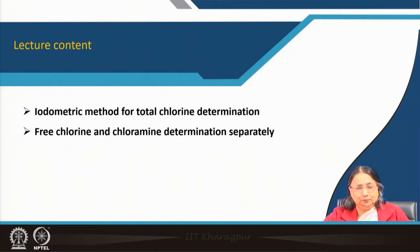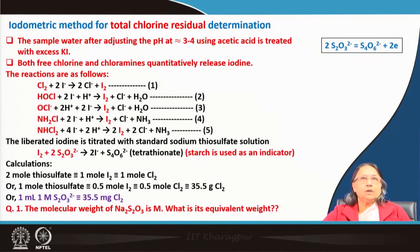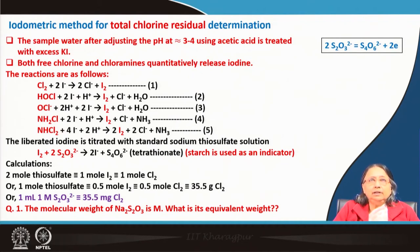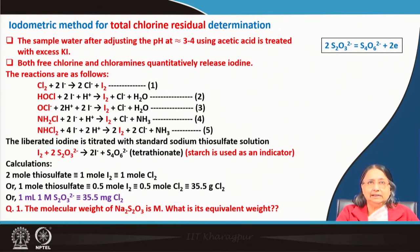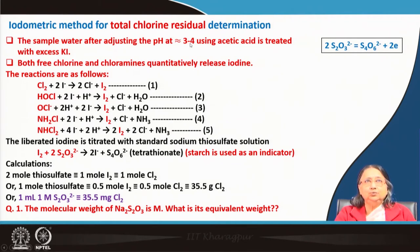Now I will discuss the iodometric method for total chlorine residual determination. Total chlorine means free chlorine residual plus combined chlorine residual. The sample water, after adjusting the pH to 3–4 using acetic acid, is treated with KI in excess amount. This determination is done at low pH maintained by acetic acid.